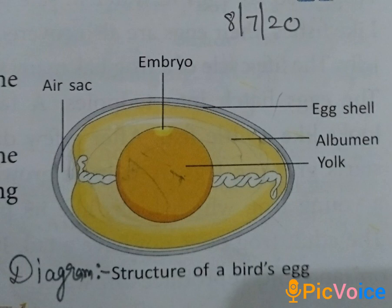A watery and white part surrounds the yolk — this is called albumin. And this albumin protects the embryo. At the center there is a yolk, and around the yolk there is a watery substance that is white in color. This is called albumin, and it helps to protect the embryo.